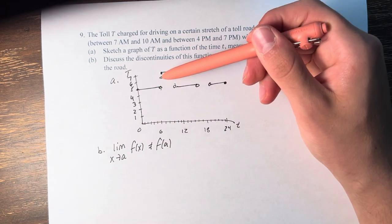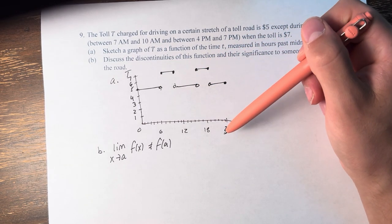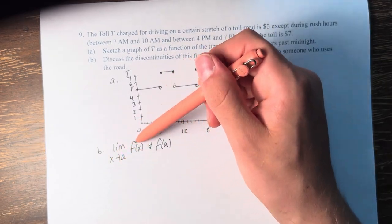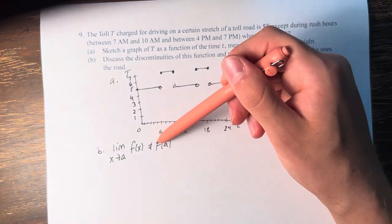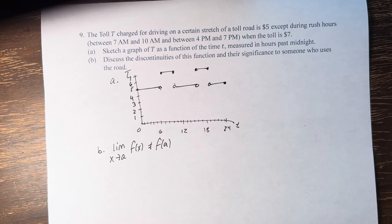Where the value jumps, that means for any of these points where we're approaching from the left and the right, we're approaching different values, and therefore the limit doesn't exist, and therefore it can't even equal the value of the function because it doesn't exist in the first place.